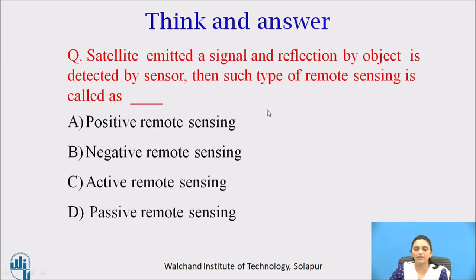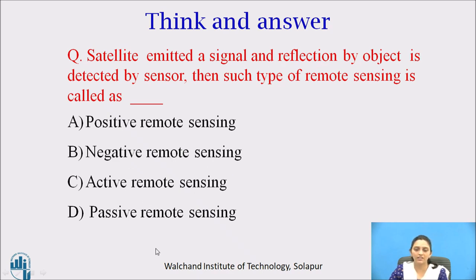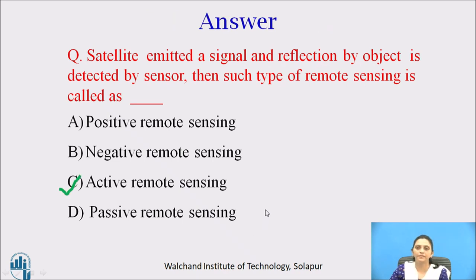Now pause the video and answer this question: a satellite emits a signal and the reflection by the object is detected by the sensor — such a type of remote sensing is called: positive remote sensing, negative remote sensing, active remote sensing, or passive remote sensing? The answer is active remote sensing, because the satellite itself emits a signal, playing the role of the source.